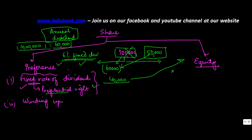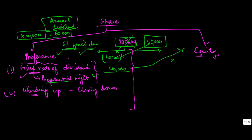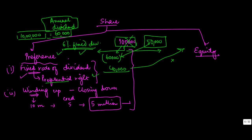The second preference is in the event of winding up. Winding up means the company is unable to perform the business for which it was set up, or it has made losses, and shareholders or creditors decide the company should no longer work — essentially closing down. When winding up happens, whatever money the company realizes — say it sold all assets and got 10 million, with liabilities of 5 million — they are left with 5 million.